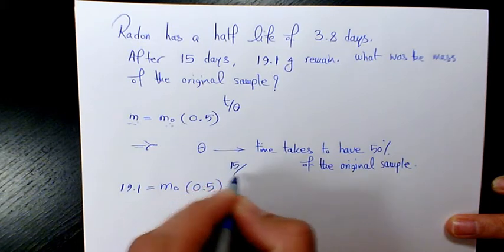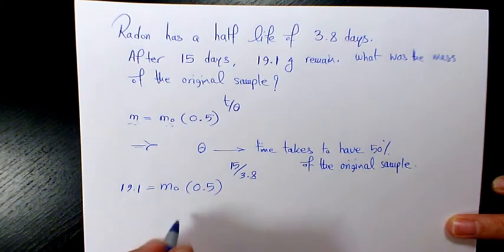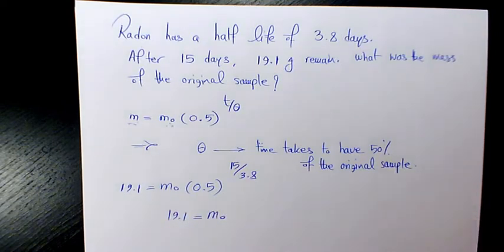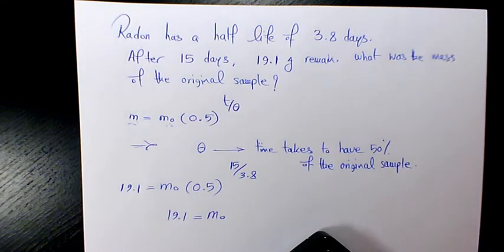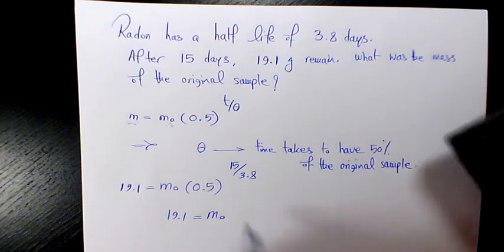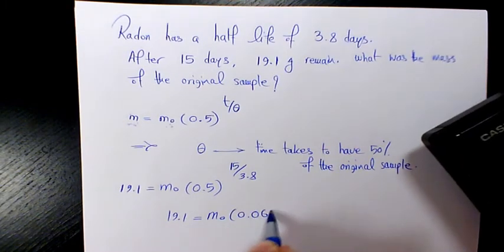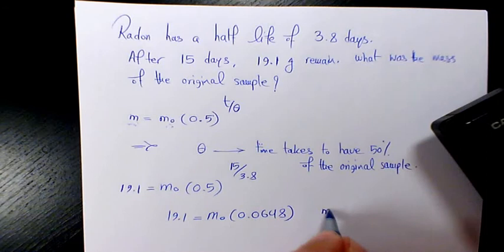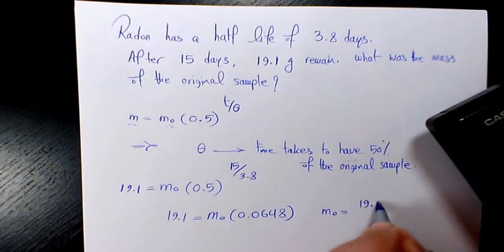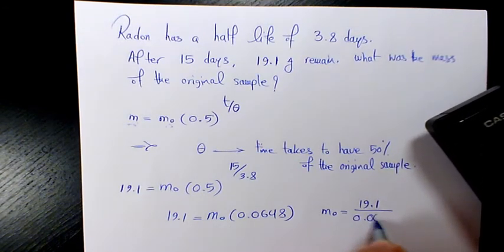15 days divided by 3.8. So we have 19.1 equals m₀ times 0.5 to the power of 15 divided by 3.8. That's going to give me 0.0648. So m₀ is going to be 19.1 divided by 0.0648.